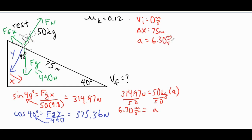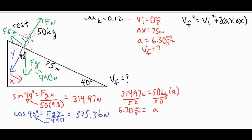Now we have our third variable and we're solving for final velocity. We use the formula vf² = vi² + 2aΔx, because that's the kinematic formula where we have three of the four variables and the unknown is vf. Let's plug in those numbers and solve.